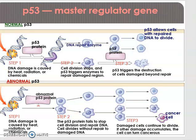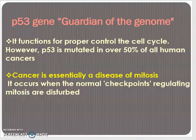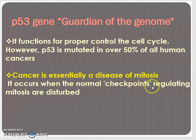In these checkpoints, the P53 gene plays a main role. If the DNA is damaged, the P53 gene activates DNA repair enzymes and the DNA is repaired. In the case of cancer patients, this gene is abnormal and fails to repair the DNA, so the DNA replicates uncontrollably and turns cancerous. We can say that cancer is essentially a disease of mitosis — it occurs when the normal checkpoints regulating mitosis are disturbed. Although mitosis is a very basic process, it is a prime phenomenon of life, and if it is disturbed it can cause a serious disease: cancer.